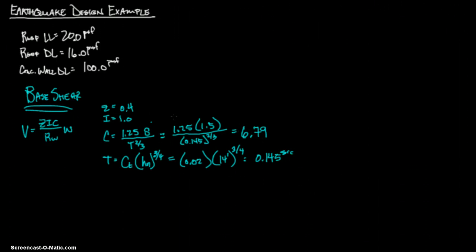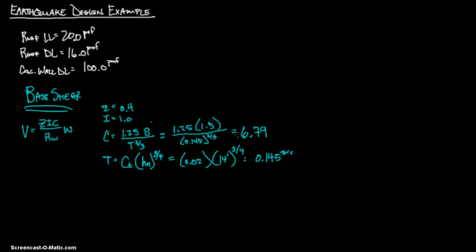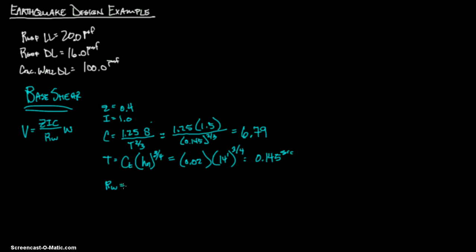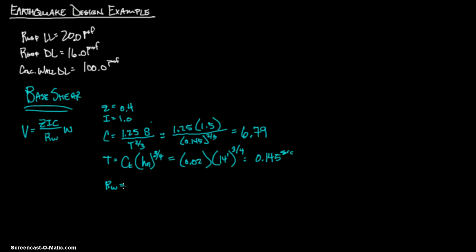That's your C value, which is unitless — essentially a coefficient. Now we need Rw, which depends on the type of frame system. There's a table of Rw values on page 90. We don't know exactly what type of system this is — it's not a moment-resisting or dual system.